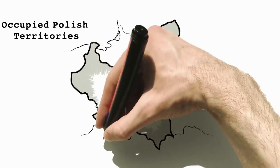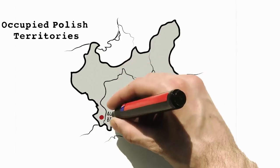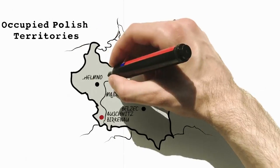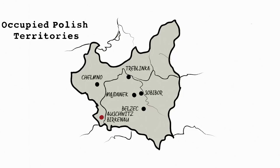The largest and most infamous camp, Auschwitz, as well as the six extermination camps, were all located on occupied Polish territory.